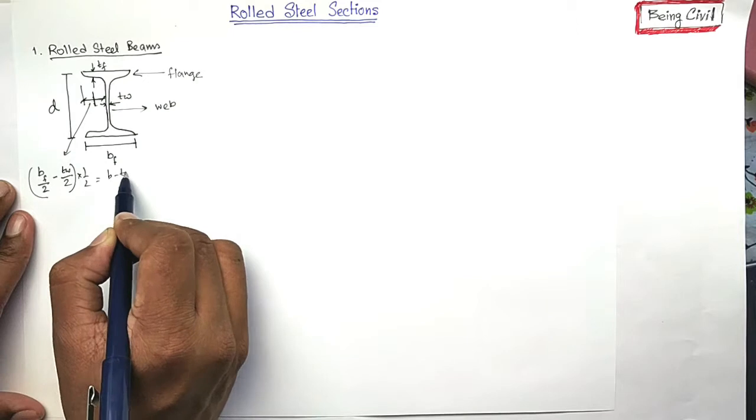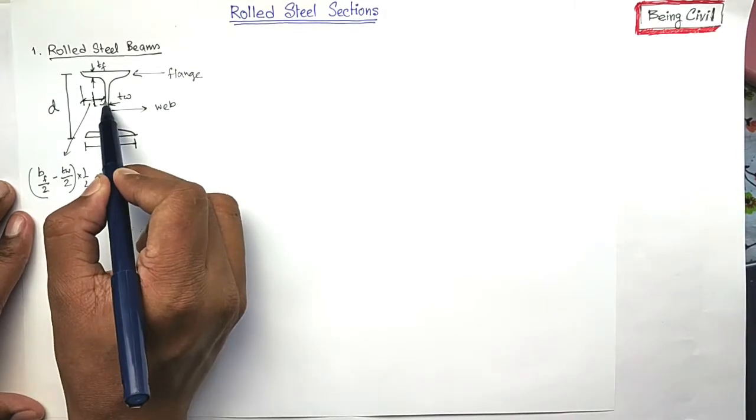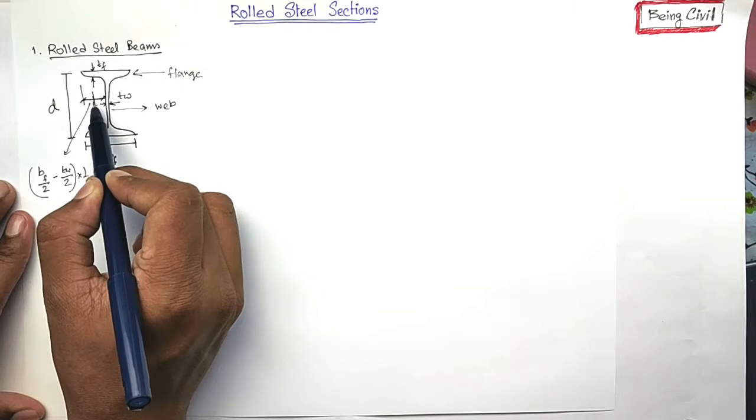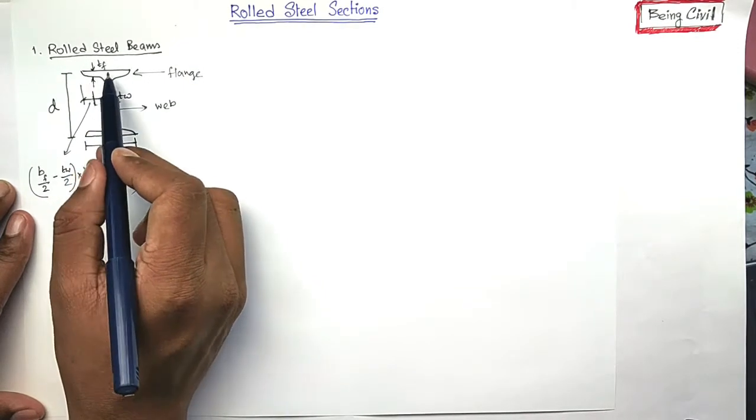So, BF minus TW by 4. At a distance BF minus TW by 4 from the face of the web, the thickness of the flange is calculated. It is TF.